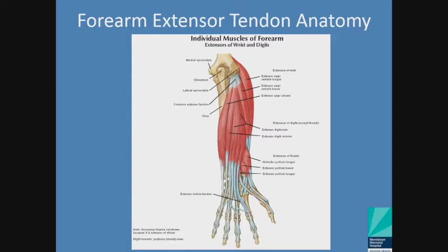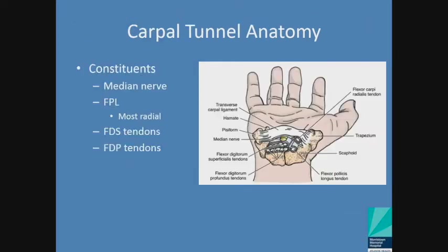As we move from the forearm to the wrist, you can't talk about volar or palmar anatomy without talking about the carpal tunnel. Constituents of the carpal tunnel: directly deep to the transverse carpal ligament at the level of your wrist lies the median nerve. The most radial structure — something that constantly comes up in board examinations — what's the most radial structure in the carpal tunnel? It's your flexor pollicis longus, your flexor for your thumb.